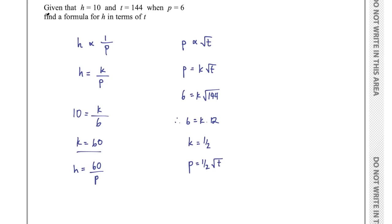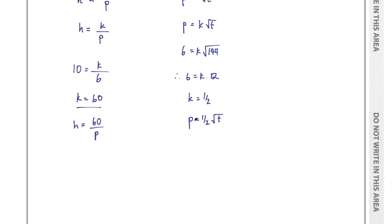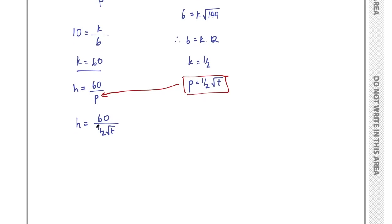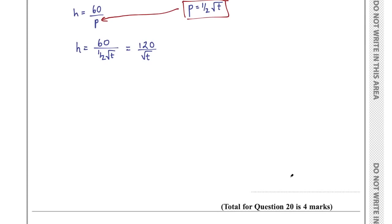Now substitute p equals (1/2) root t into h equals 60/p. This gives h equals 60 divided by (1/2 root t). Dividing 60 by one half gives 120, so h equals 120 over root t. That is the formula for h in terms of t. That was question 20 for 4 marks.